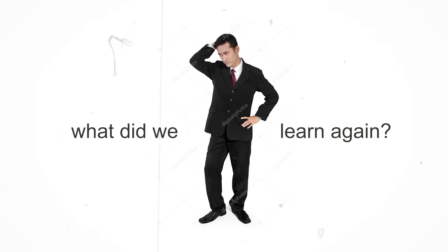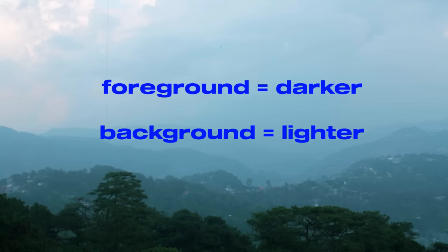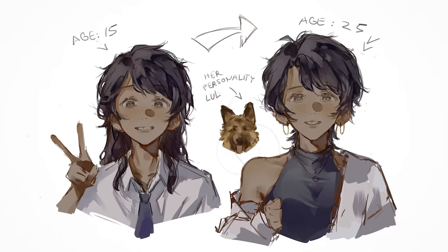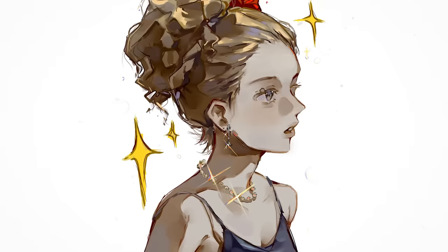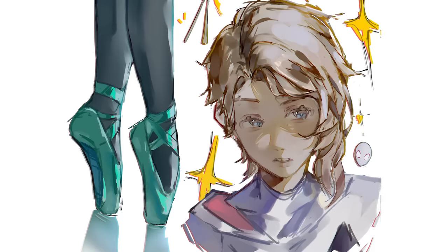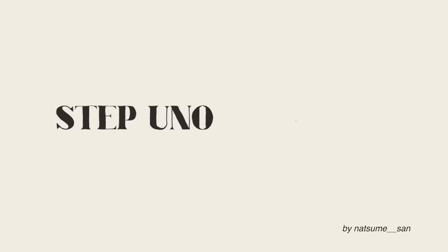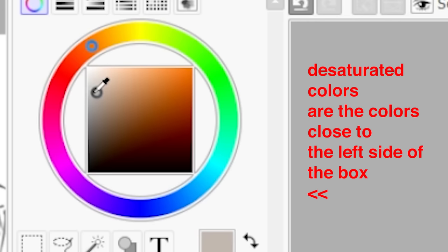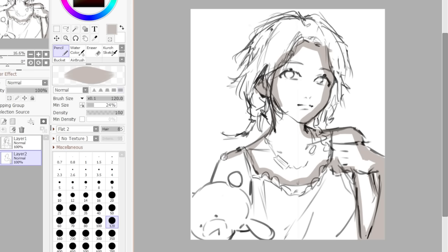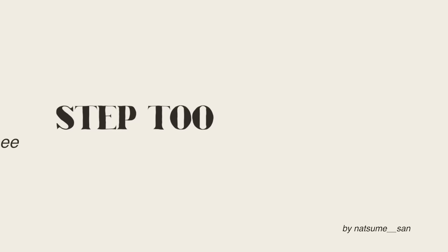Now that we know what values are, let's talk about why you clicked on this video — to learn how to color. Let's use what we learned from values: foreground darker, background lighter. If you're lazy like me, we don't have to apply that for backgrounds. Step one: what I like to do is start with a desaturated base color.